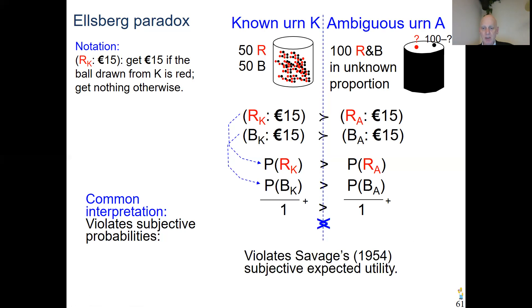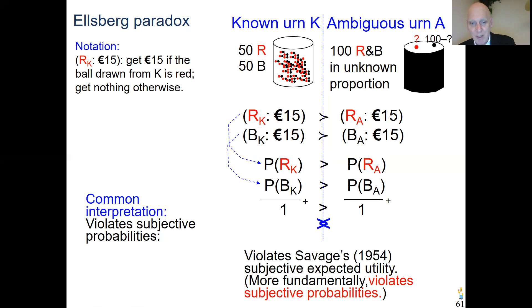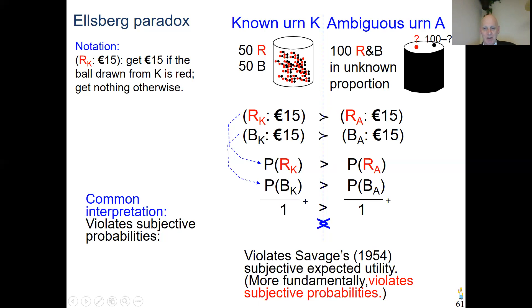This is already enough. It surely violates the subjective expected utility model of Savage, and as I said, it's more fundamental — any model based on subjective probabilities is violated here. Normatively, Savage's contribution is in my opinion the most brilliant in the field, and it convinced me that rationally we should do subjective expected utility maximization. But empirically, this is the prevailing pattern, and surely empirically this model is violated. Every model with subjective probabilities is empirically violated. So when we work with unknown, ambiguous probabilities and want to do empirically realistic work, we need fundamentally different models than those used for risk.